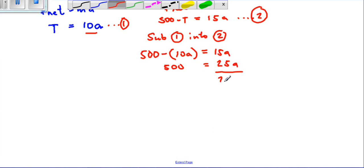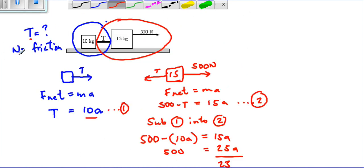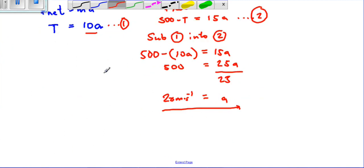If we divide both sides by 25, we'll see A equals 500 divided by 25, which equals 20 meters per second squared. Now we've got our acceleration of the motion.